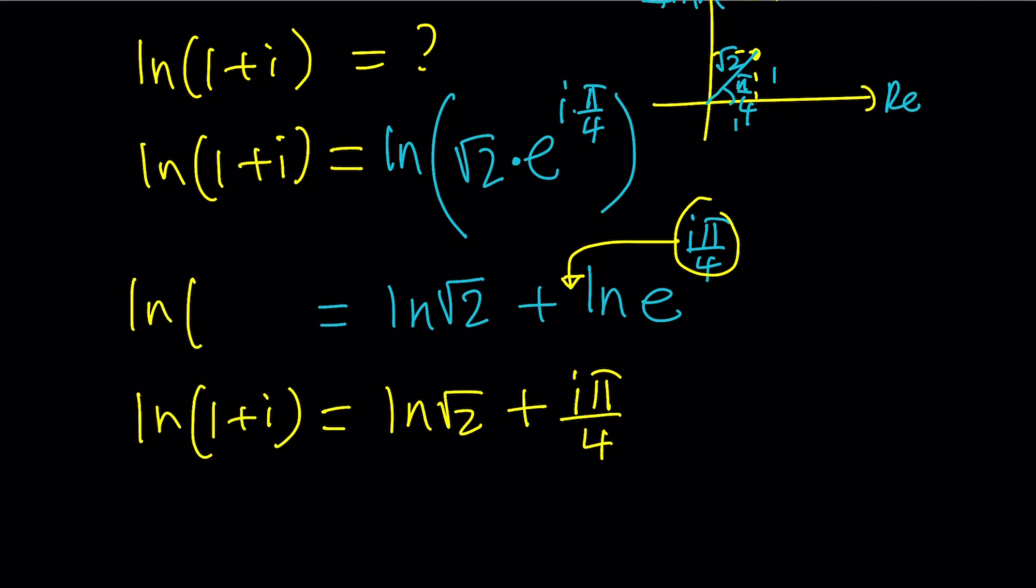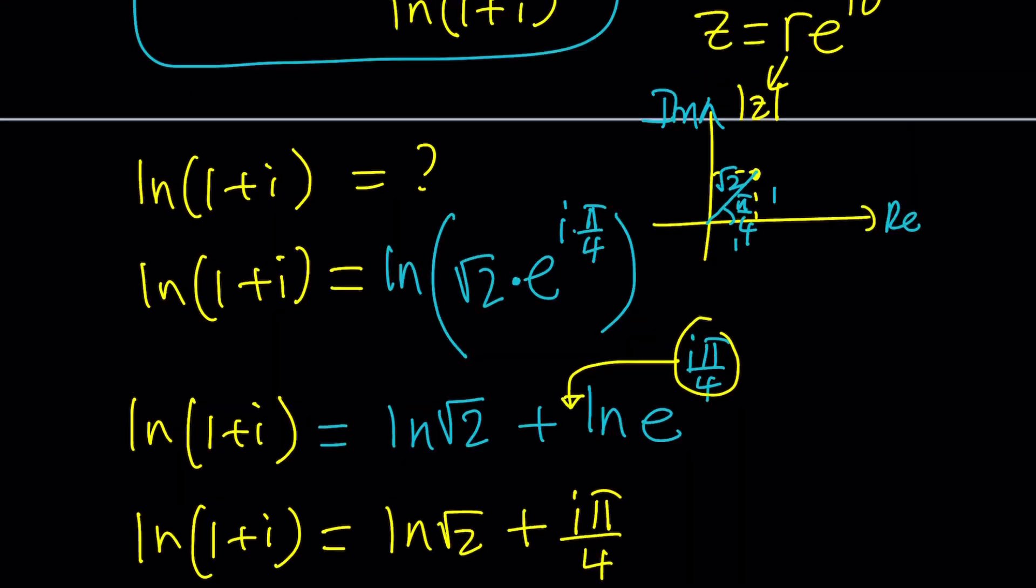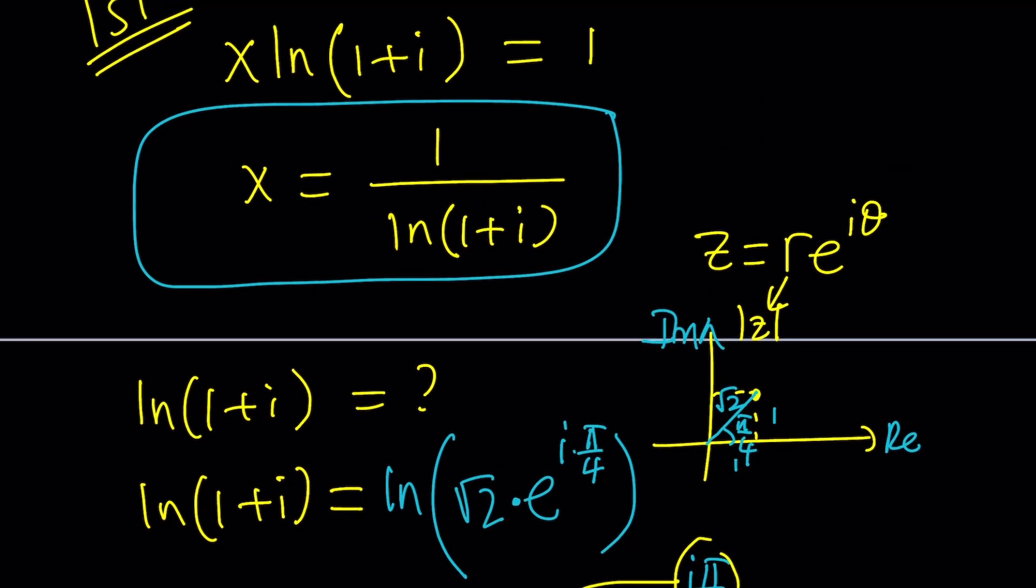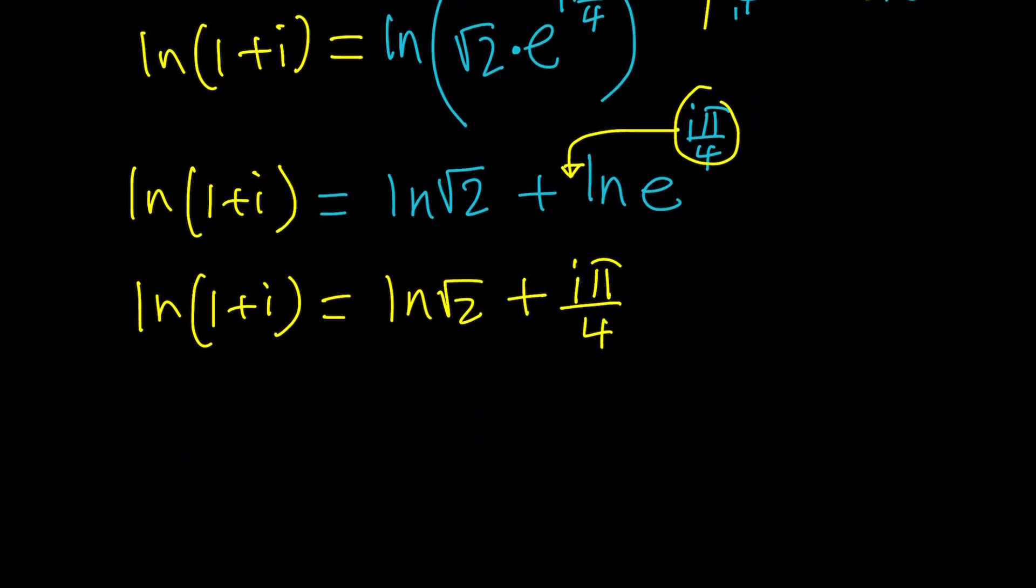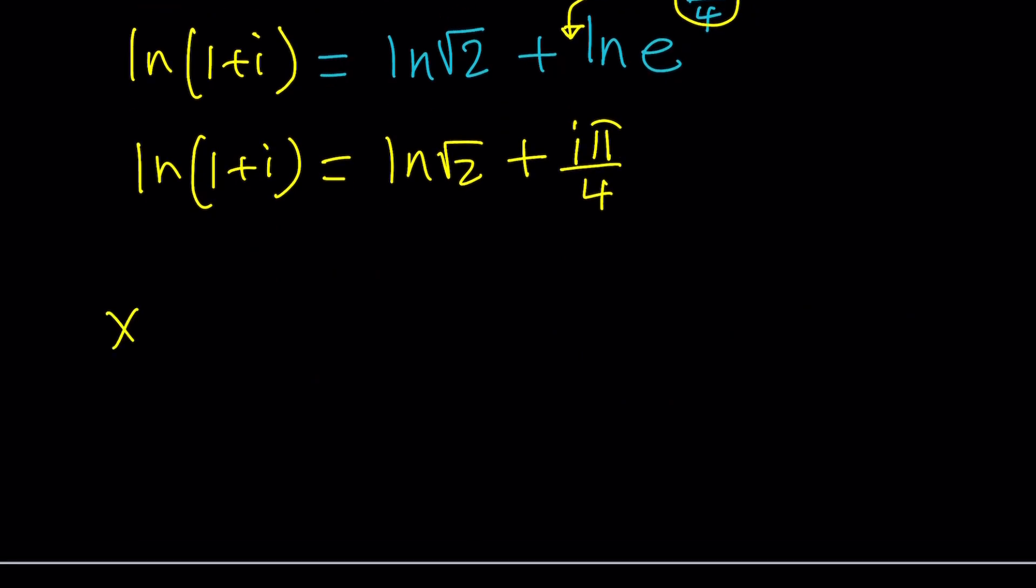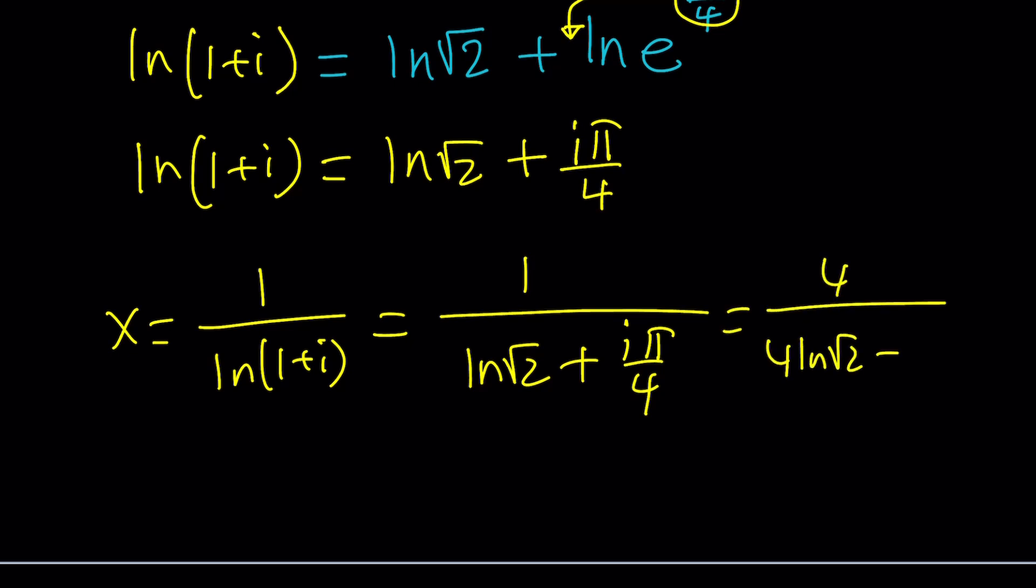Now, what I need to do is reciprocate it. We do need 1/ln(1+i). So what's the reciprocal of this expression? It's 1/(ln√2 + iπ/4). If you multiply the top and the bottom by 4, you're going to get 4/(4ln√2 + iπ).